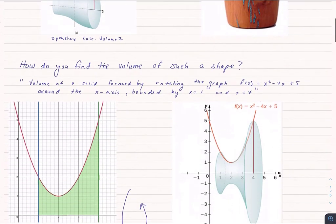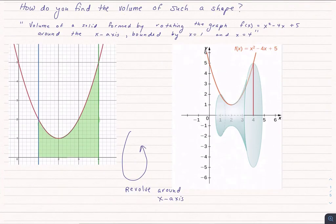Well what's very nice about this is the cross-sectional area is a circle. If we take that function, and I just have a function here x squared minus 4x plus 5,